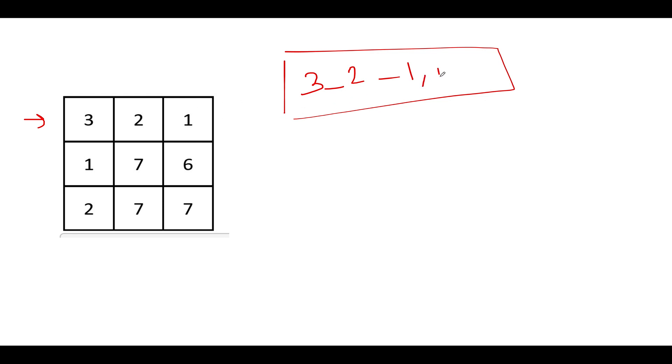The second hash would be 1 underscore 7 underscore 6. And you can use any other element apart from underscore to create the hash. And the third one would be 2 underscore 7 underscore 7. So this is the row set that we have created. Now let's do the same kind of thing for the columns as well. The first hash entry would be 3 underscore 1 underscore 2. The next would be 277, and the third one would be 167.